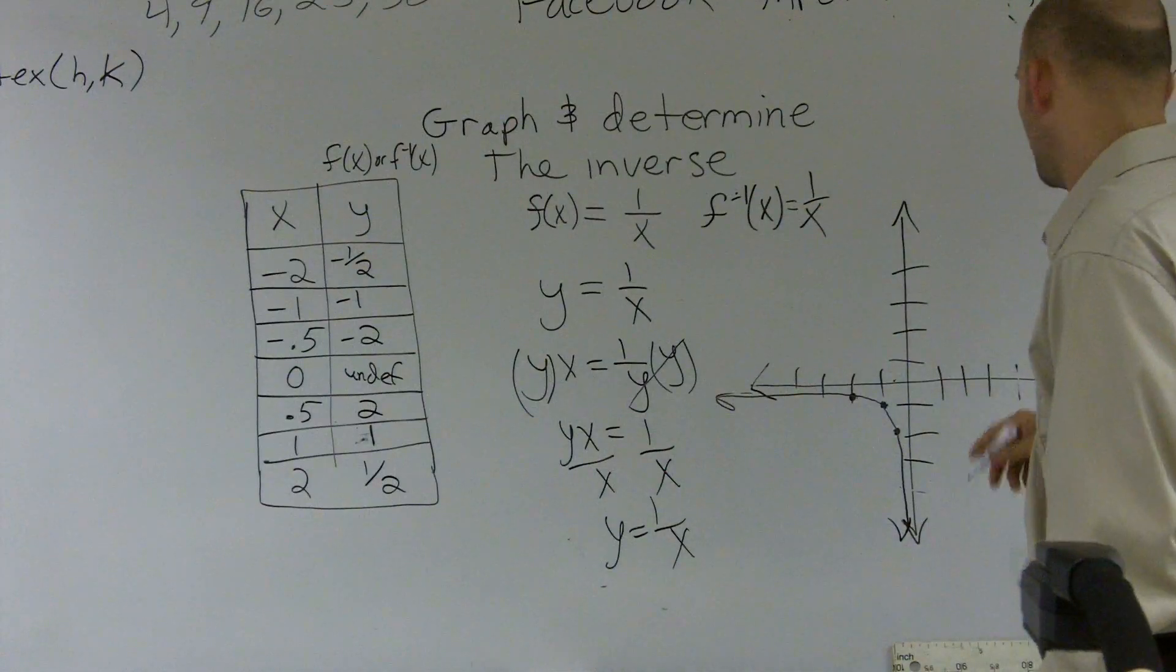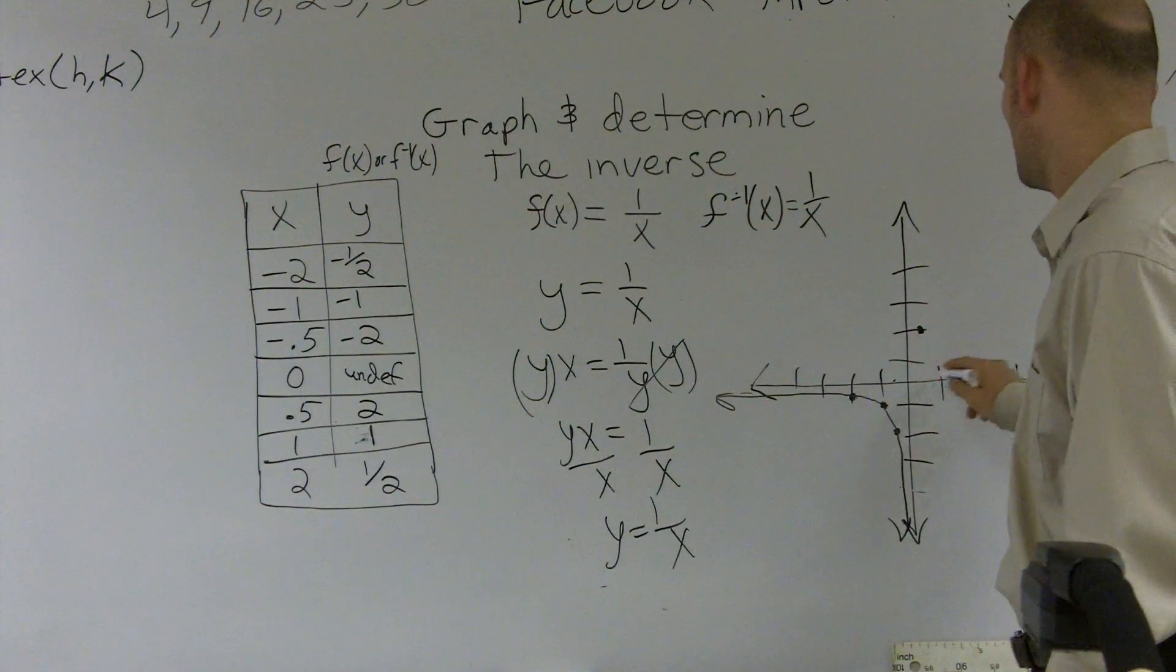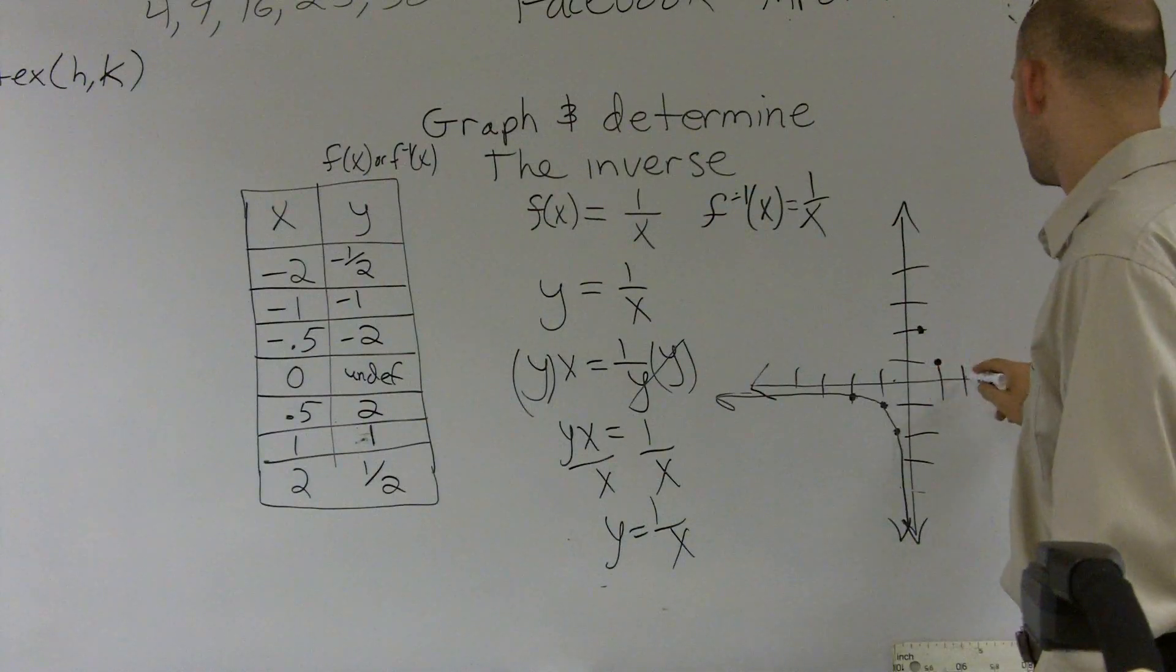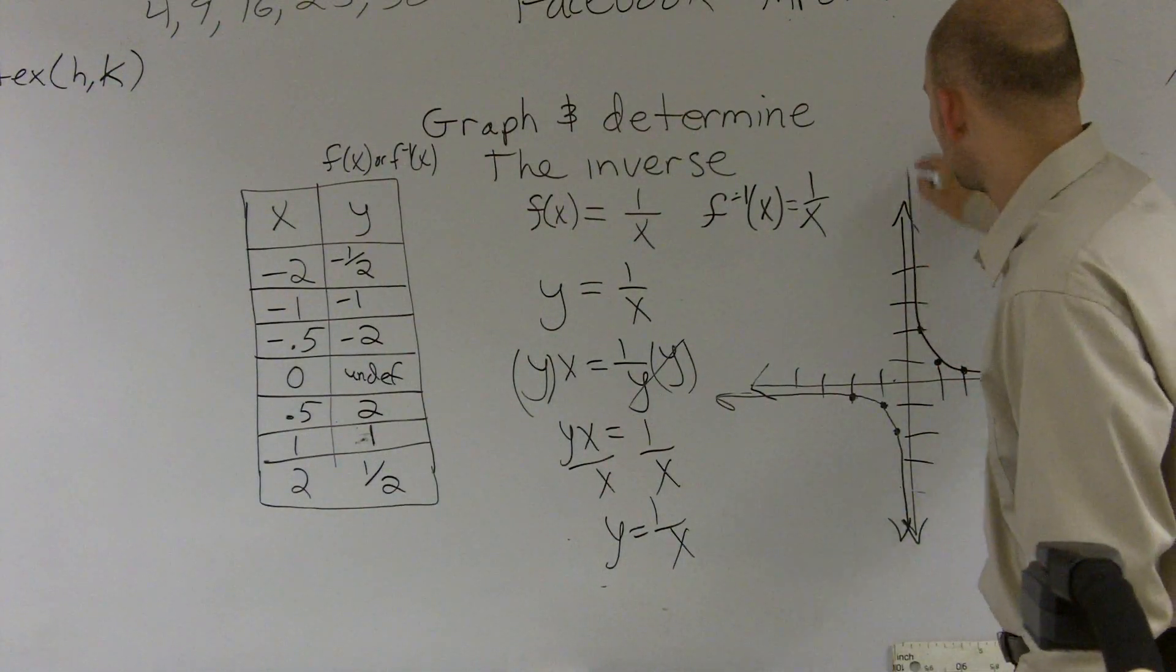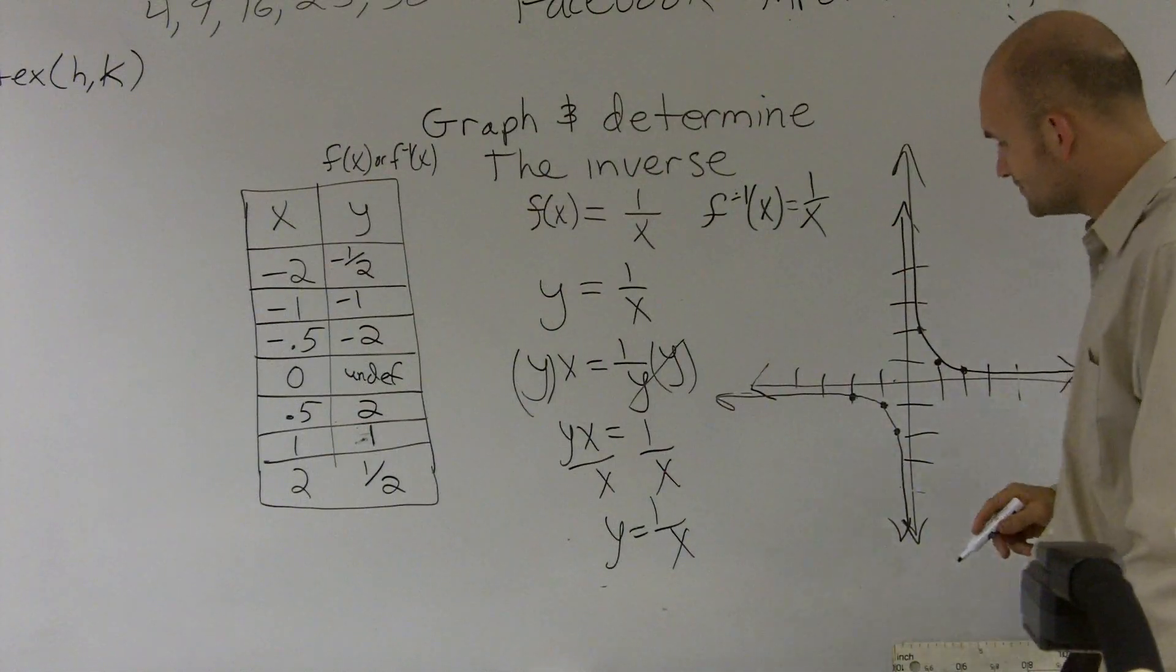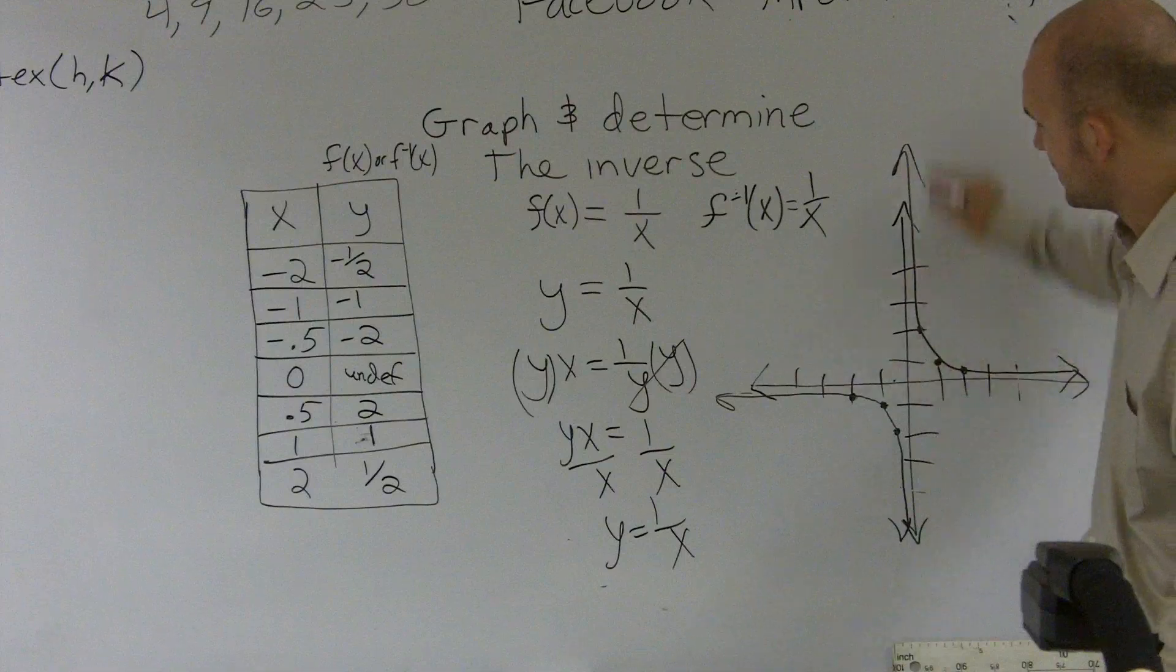Then I look at my other part of my graph and I say 0.5 is the 2. 1 is the 1. And 2 is the 1 half. So again, I'm looking at a graph that is not going to pass my 0.